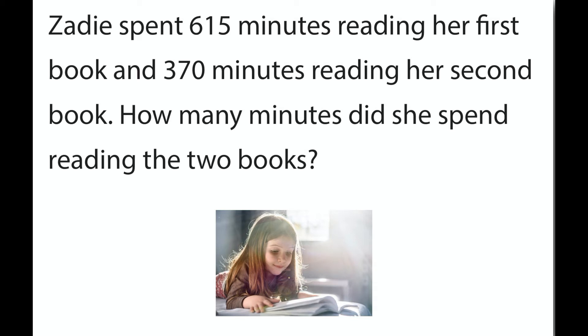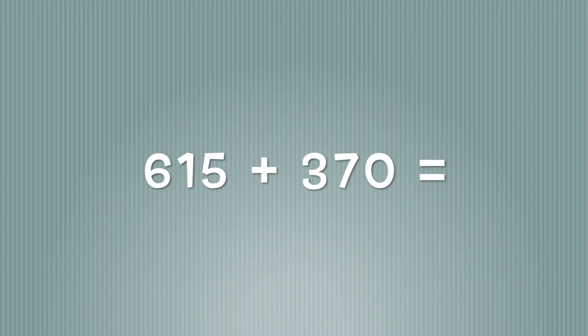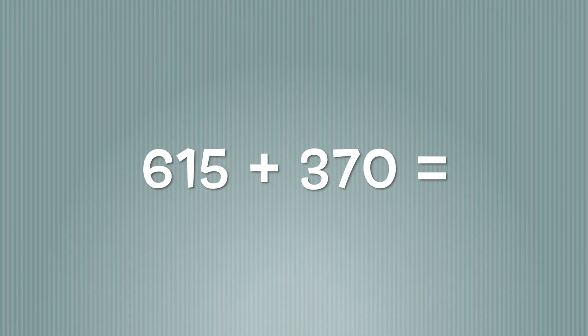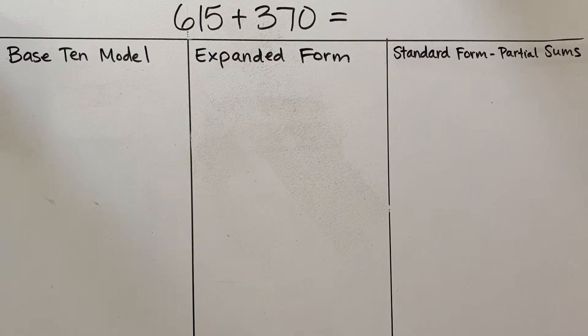Zadie spent 615 minutes reading her first book and 370 minutes reading her second book. How many minutes did she spend reading the two books? Now take a moment to think about what the equation would look like. Did you say 615 plus 370? Well that is correct. That's what we're going to be solving. We're going to be showing